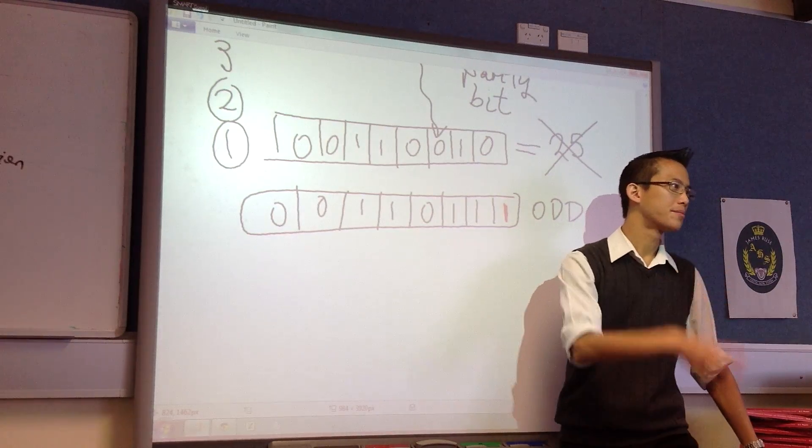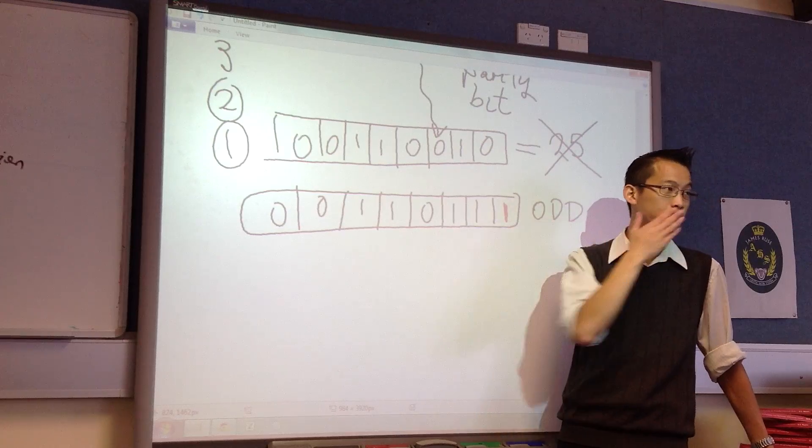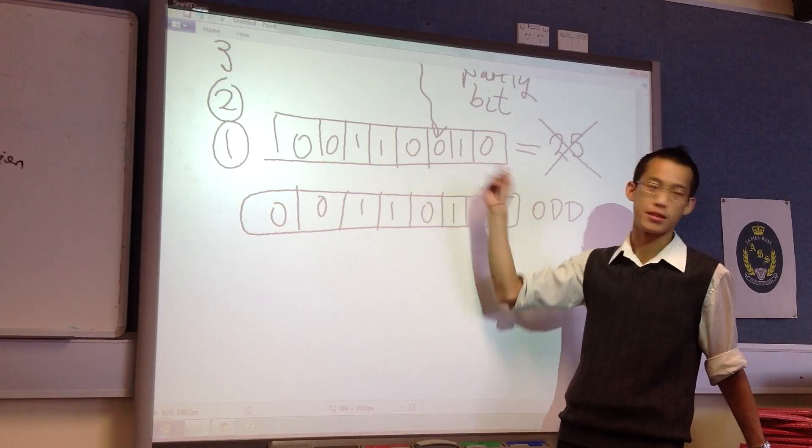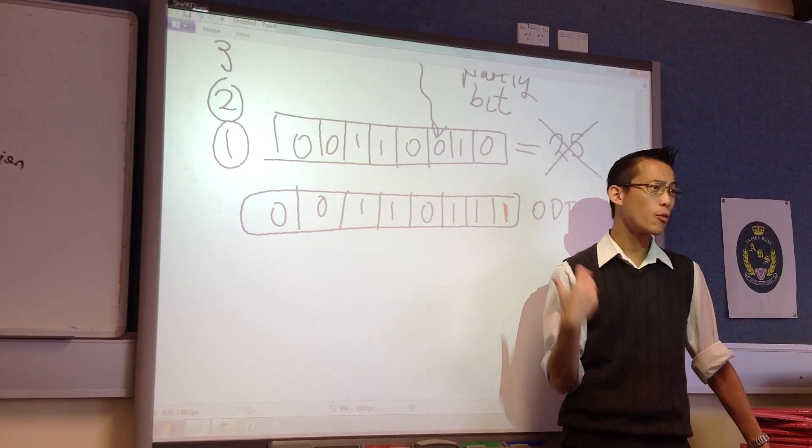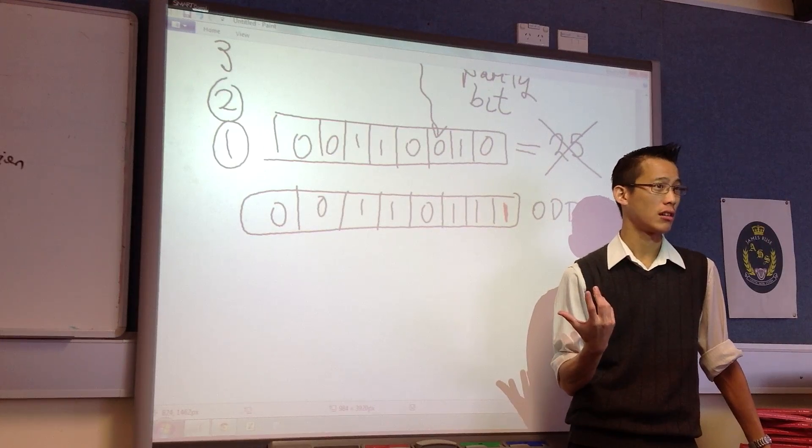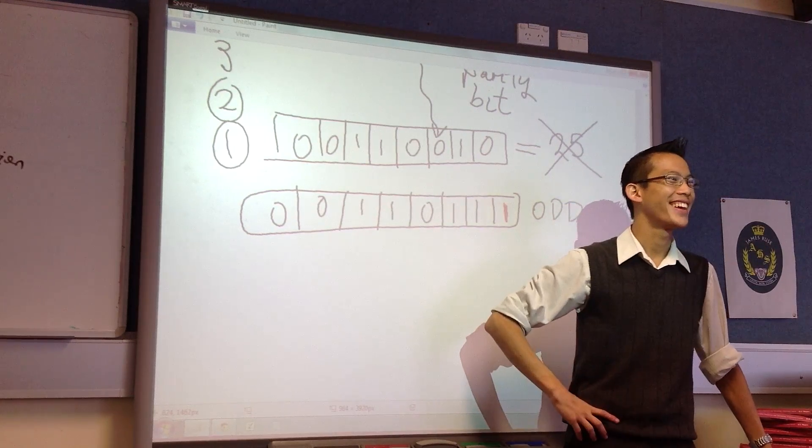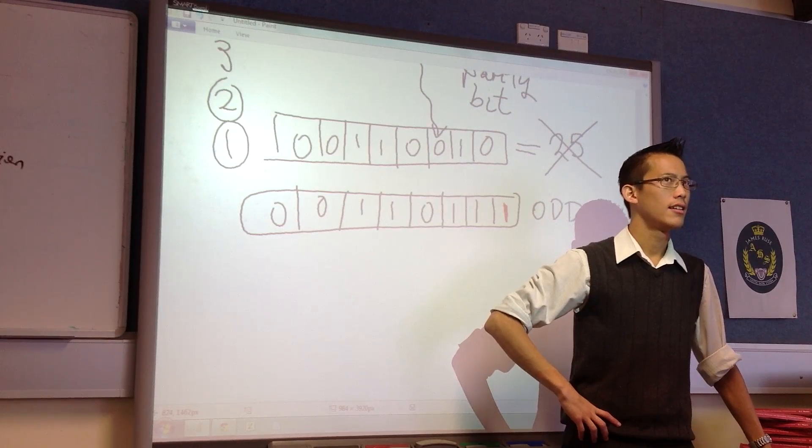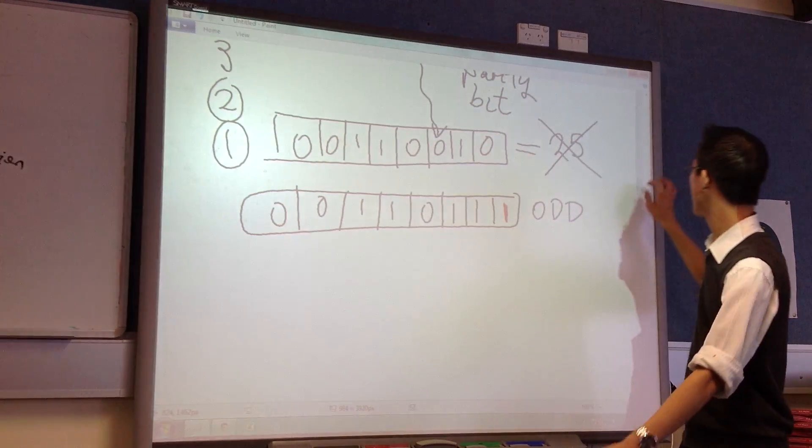Now can someone tell me? This is good, it'll catch out a lot of the errors that are going to come through. But there's some real problems with this method of checking. Can anyone suggest one? Yeah Pock? If the parity bit gets altered, it's screwed. Let's try that, shall we?